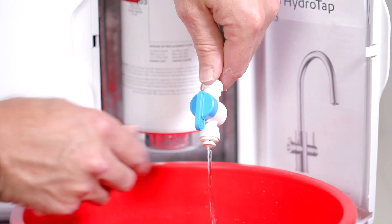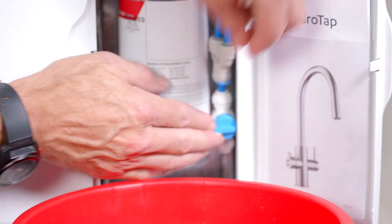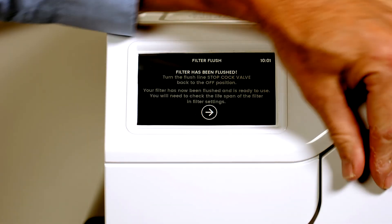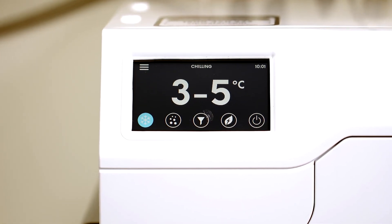Once the filter flush has stopped turn off the stopcock and give it a shake. Put the flush hose back in the filter compartment and close the filter door. Press the arrow button to go to the next screen. Once completed the hydra tap will start to operate.